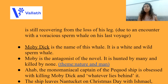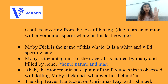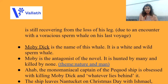Ahab has lost one leg. How? He had an encounter with a voracious sperm whale on his last voyage. And what is the name of this whale? Moby Dick — that is the titular character, the antagonist, actually the villain of the novel. Moby Dick is the name of this whale because of which Ahab lost his leg on the last voyage. This Moby Dick is wild, white, ferocious, lethal, deadly. It is the antagonist of the novel.